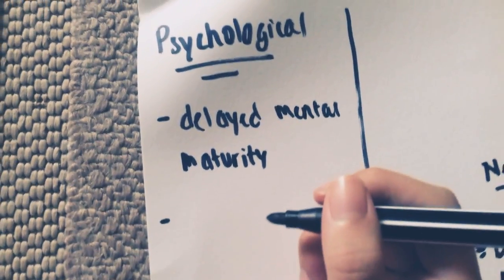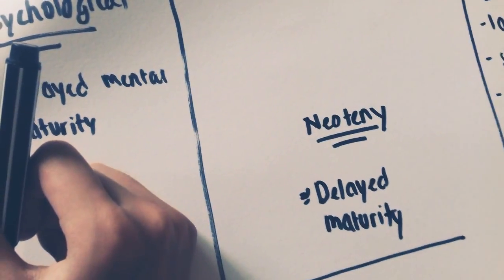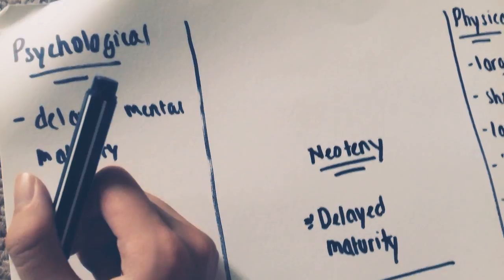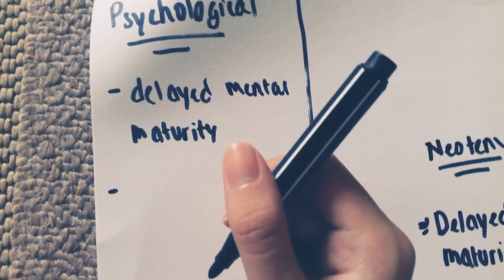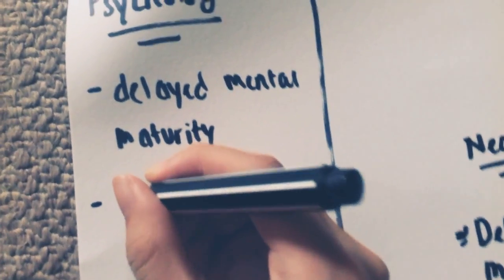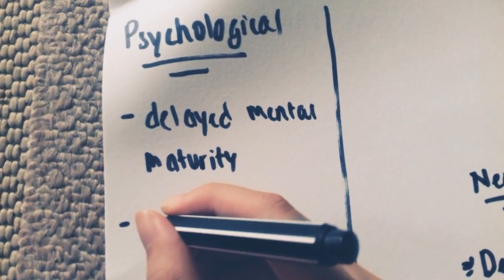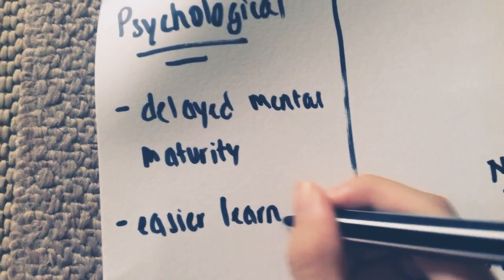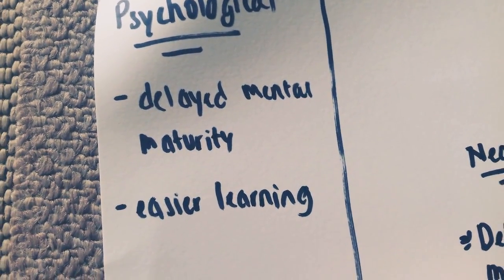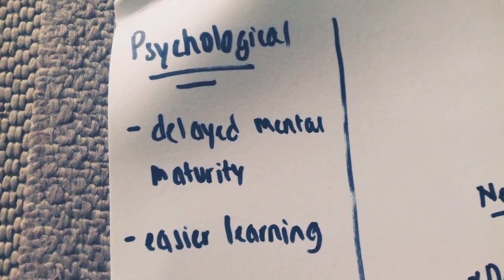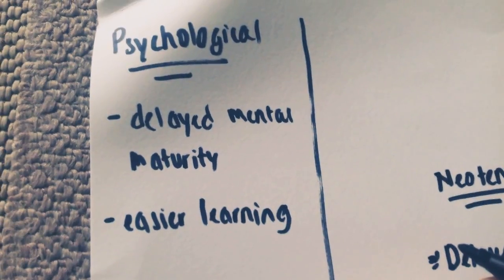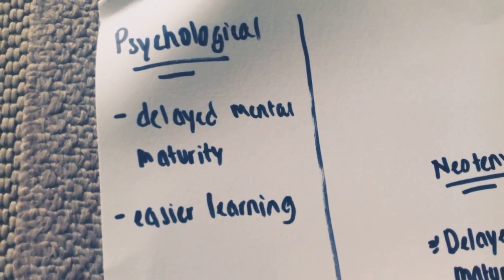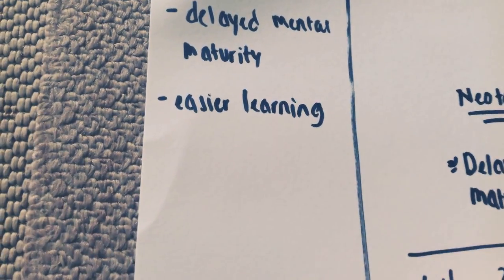Like I said earlier, it's easier for us to learn as a child. Neoteny is delayed maturity or more juvenile traits. Younger traits. Baby-ish traits. Now, psychological neoteny will allow easier learning, since we tend to think like a child. The same way it's easier for us to learn as a child. Neoteny allows any neotenized person to find it easier to learn, since they think like a child.